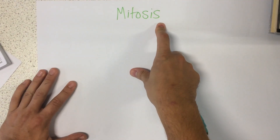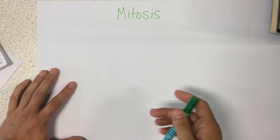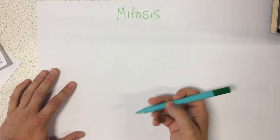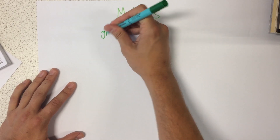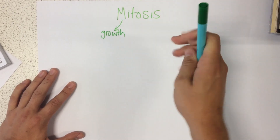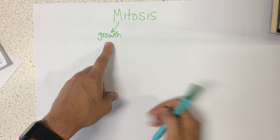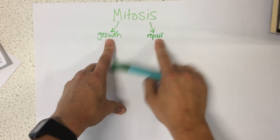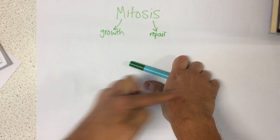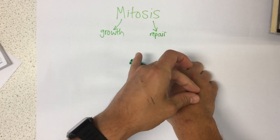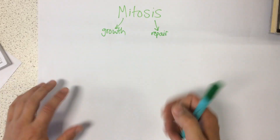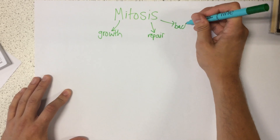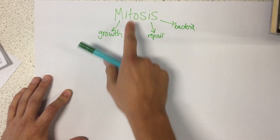Today I'm gonna talk to you about mitosis. Mitosis is a process which happens in living things to create new cells. This could be really important when we think about growth, because if an organism is growing, we need to make new cells. Also, it could be really important in repair as well. For example, if I was to accidentally cut myself, I'd need to replace those cells and produce new cells. Also, certain things such as bacteria reproduce by this process.